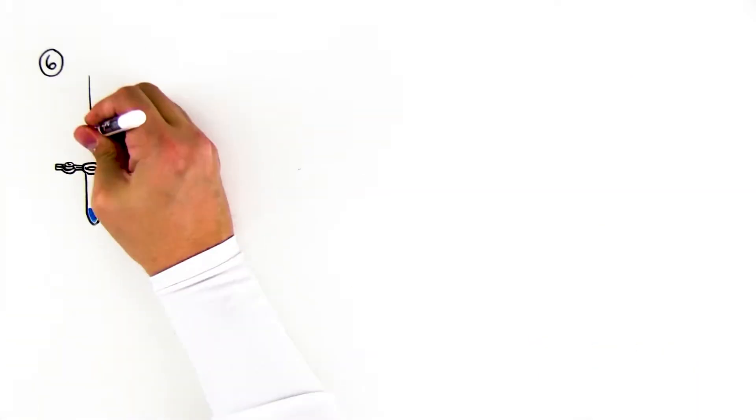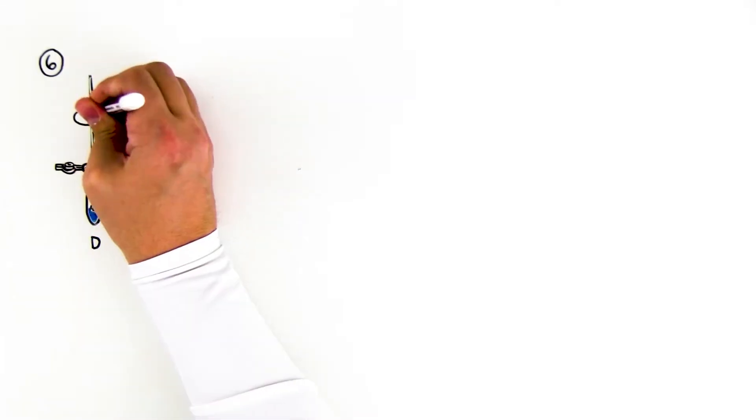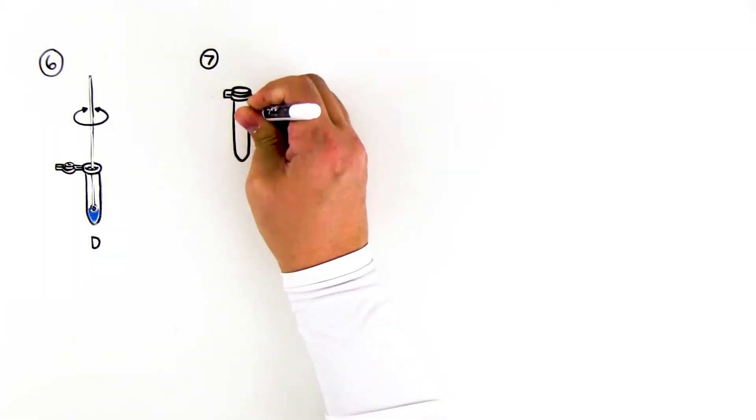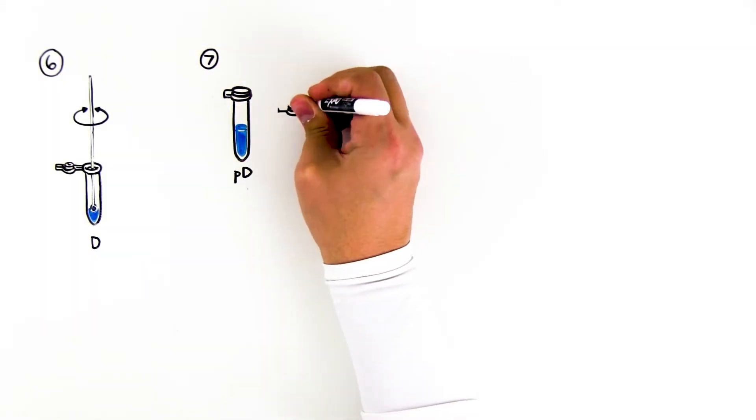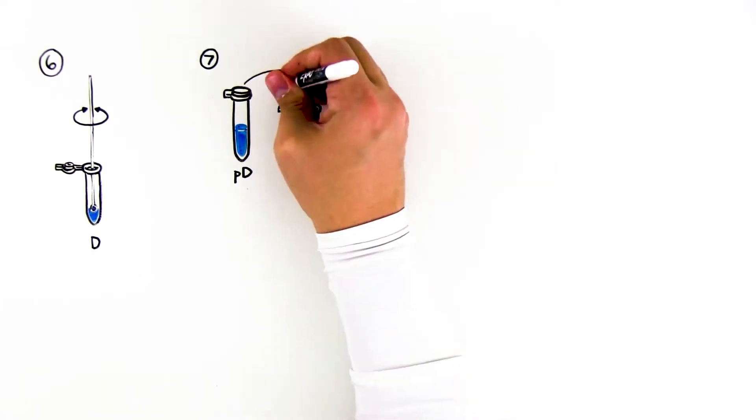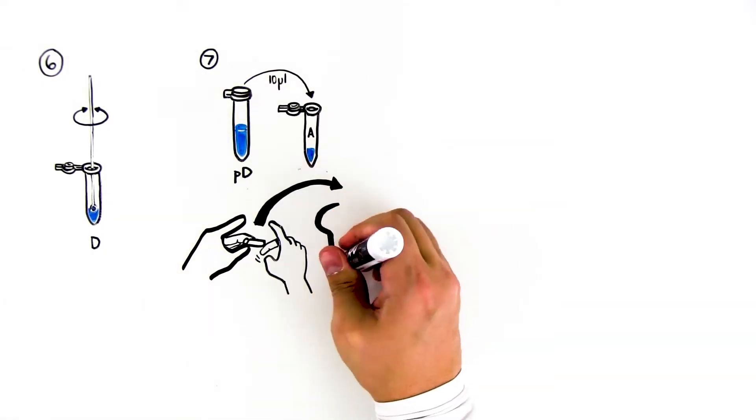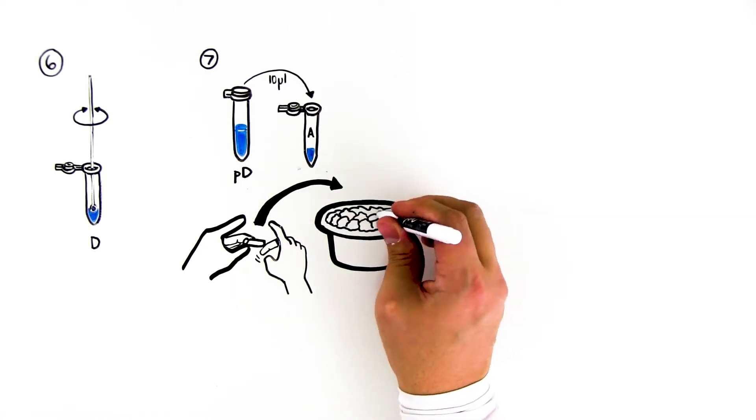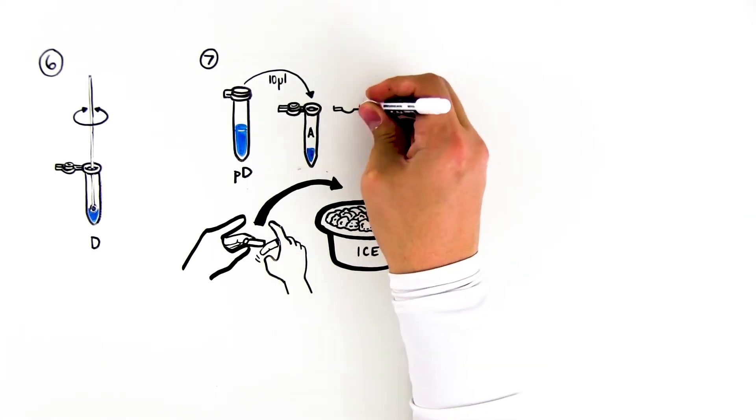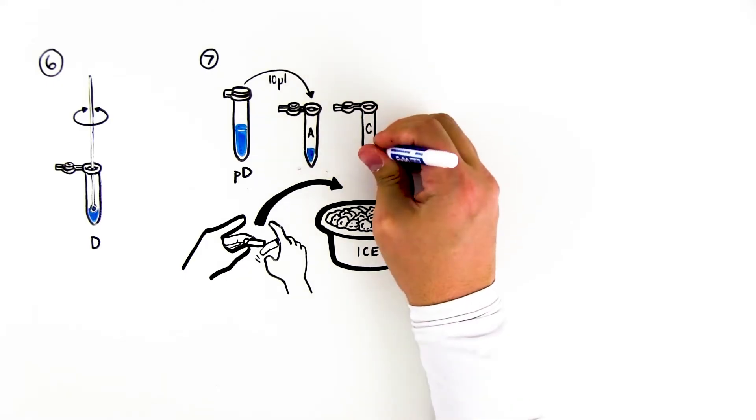Step 4: Repeat step 5 for tube D with a new loop. Step 7: Using a new pipette tip, add 10 microliters of PLZ donor PD plasmid to tube A. Close the tube, flick three times to mix, and place on ice. Using another new pipette tip, repeat with tube C.